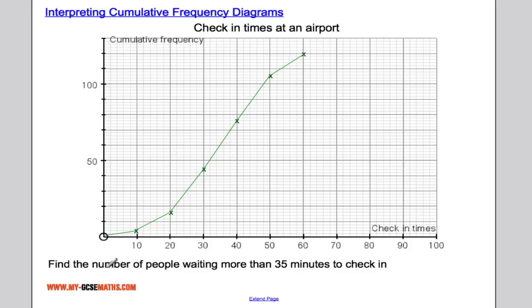If I want to know the number of people that are waiting more than 35 minutes, it's a similar type question. I'm going to go to 35 minutes, go up to where we cross our line and across. And we get, I make that out to be roughly 59. So that's 59 but that's the number of people waiting less than 35 minutes.